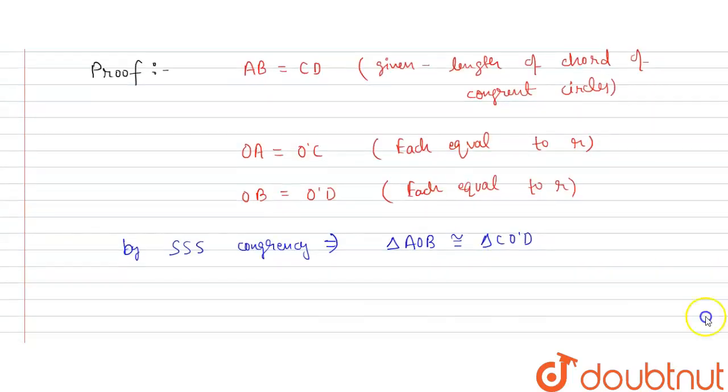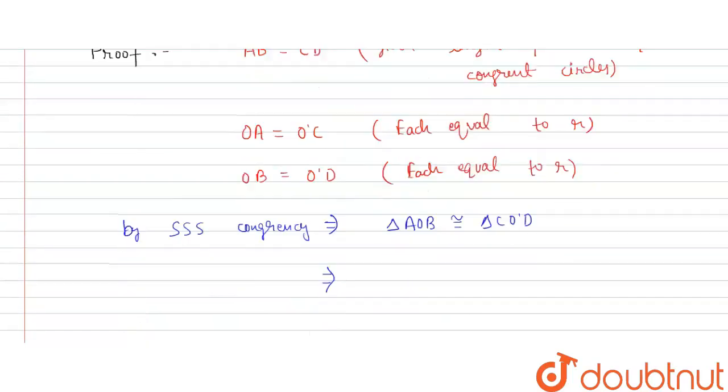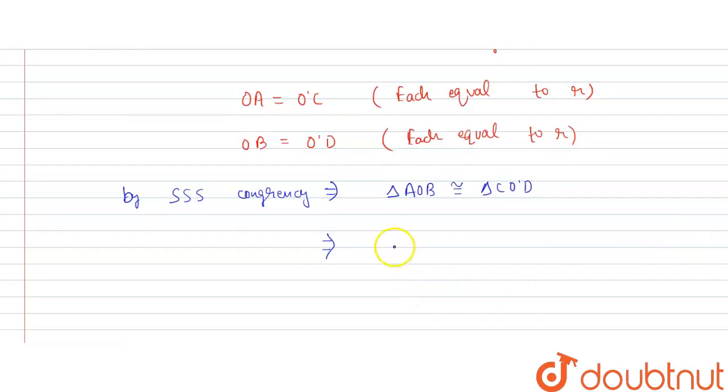So we can also say that what is asking, angle AOB is equal to angle CO'D. Because these two triangles are congruent, we can say that angle AOB is equal to angle CO'D. So this is the proof of the problem. Hence proved.